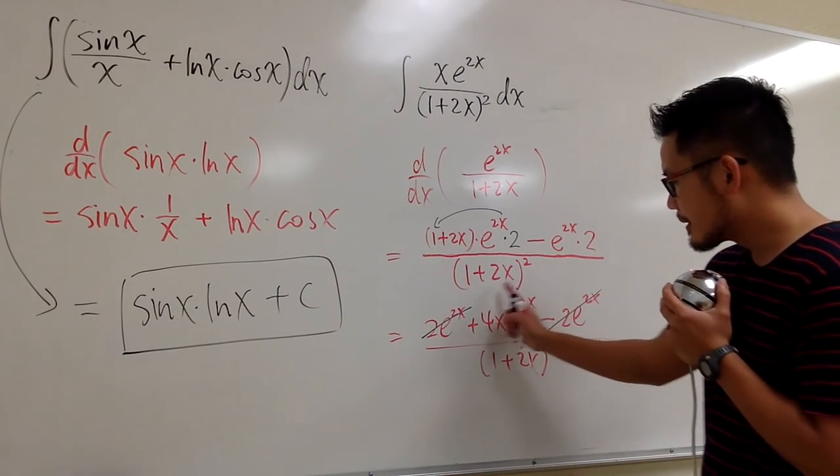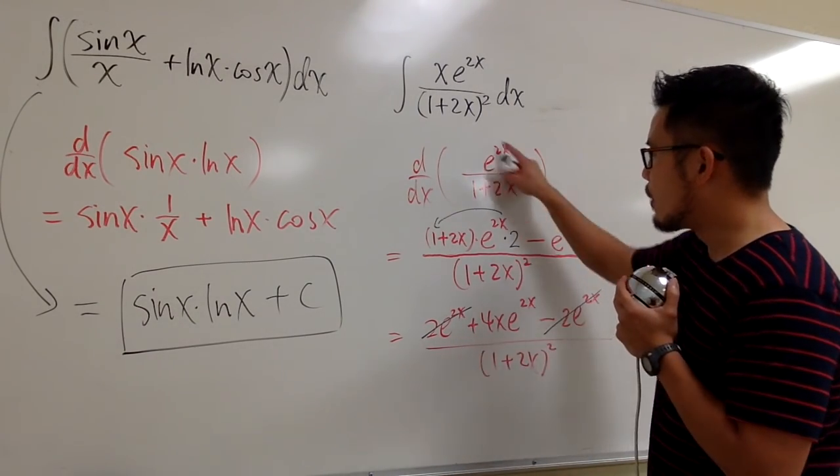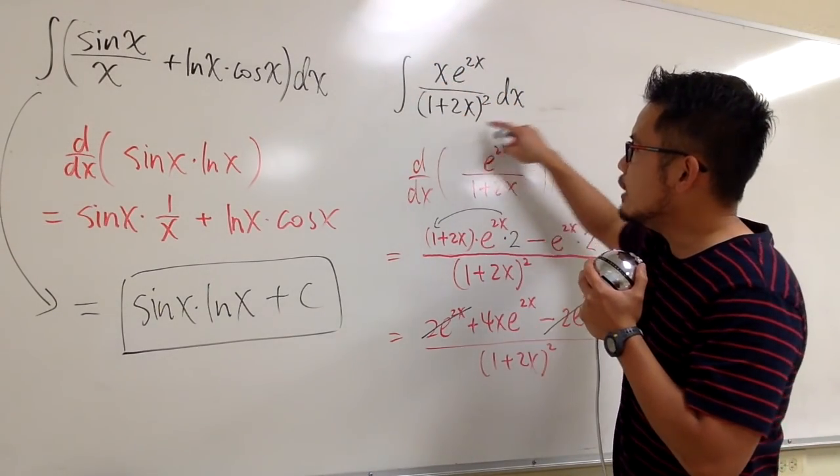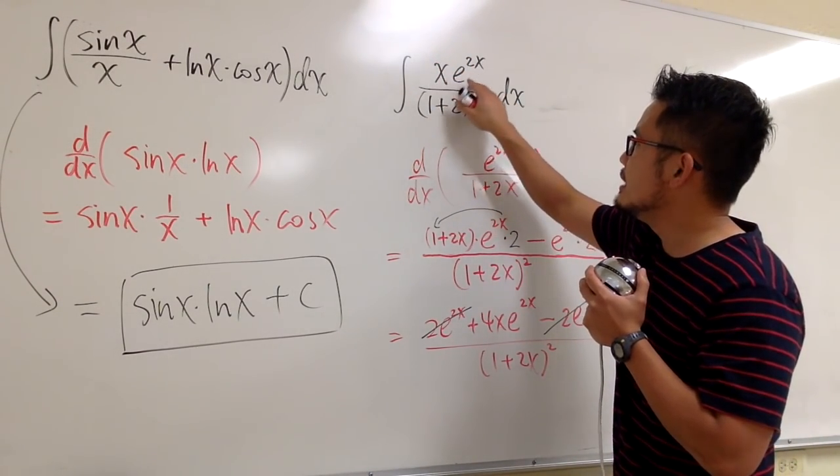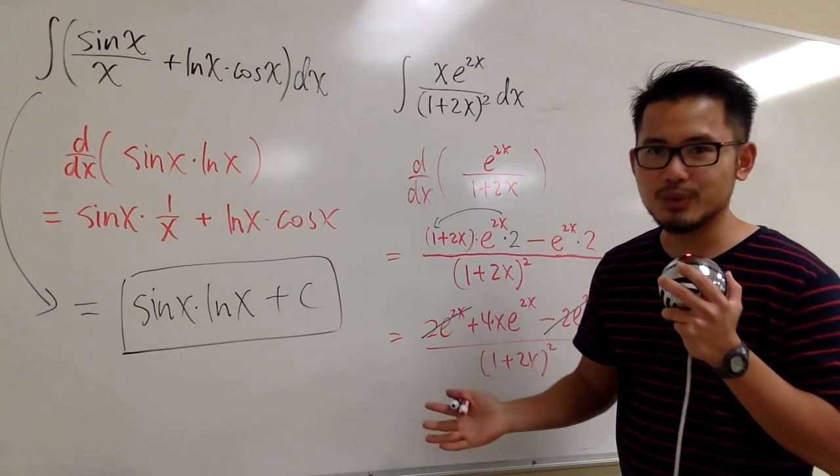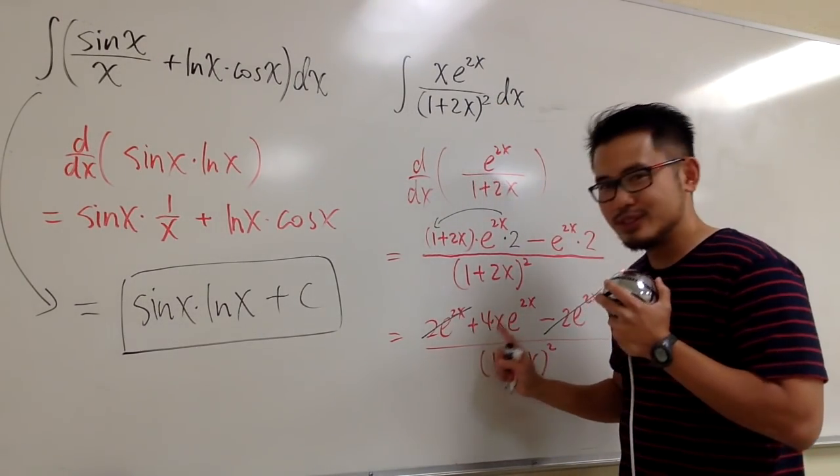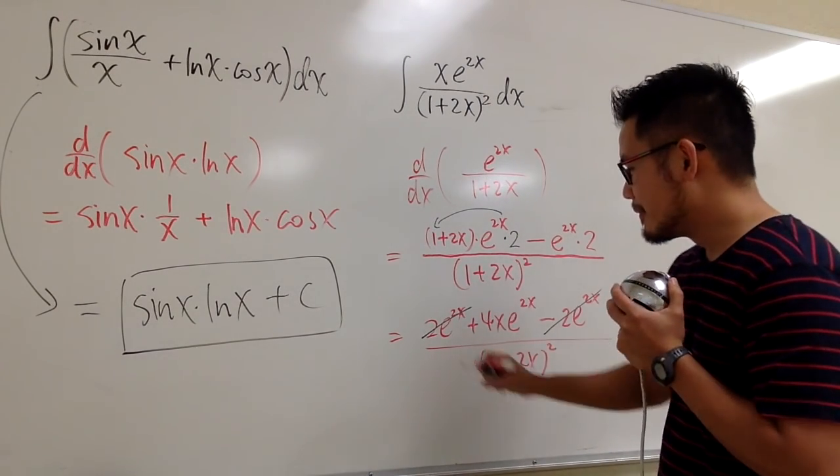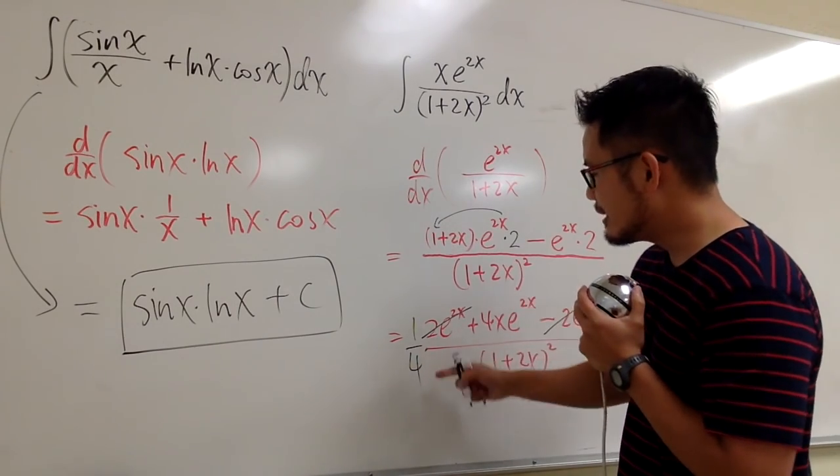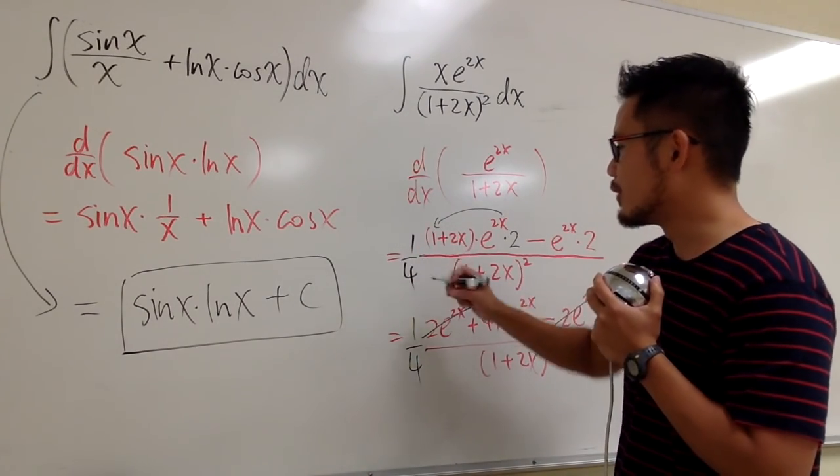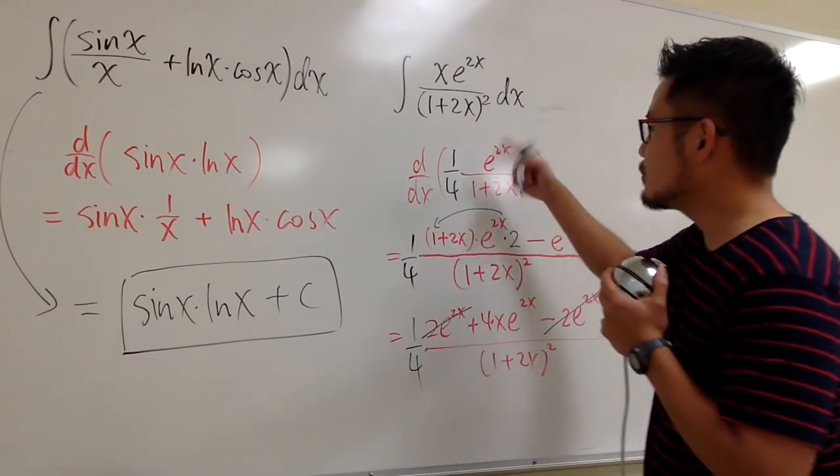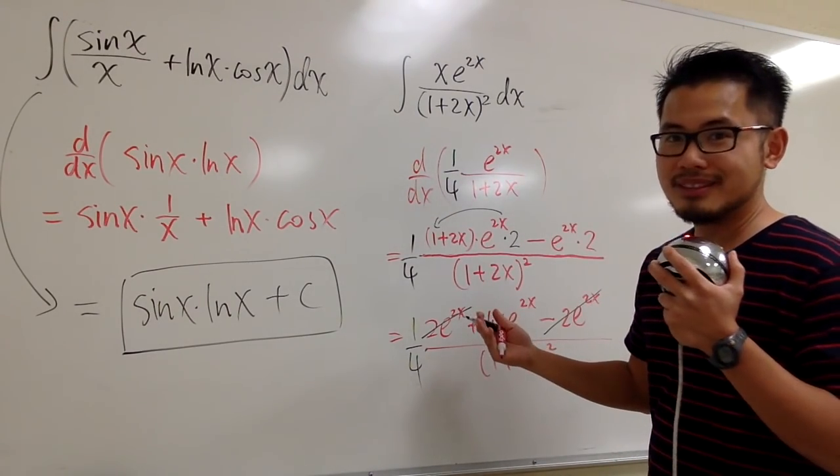And now let's compare. This is the result that we got from this derivative question. But then the original integral question is just x e to the 2x. I don't want to have this 4 in front. So what can we do? This 4 is just a constant multiple. So, how about let's just multiply 1 over 4 in the front. If I do that, I just kind of have to put a 1 over 4 in the front. I'm done. Right? I'm good.